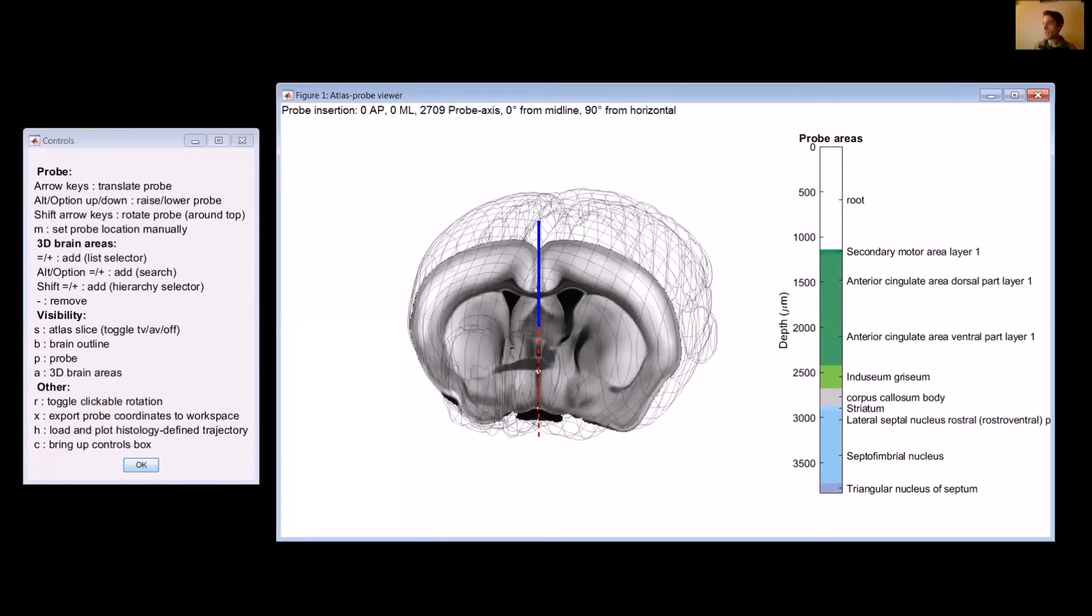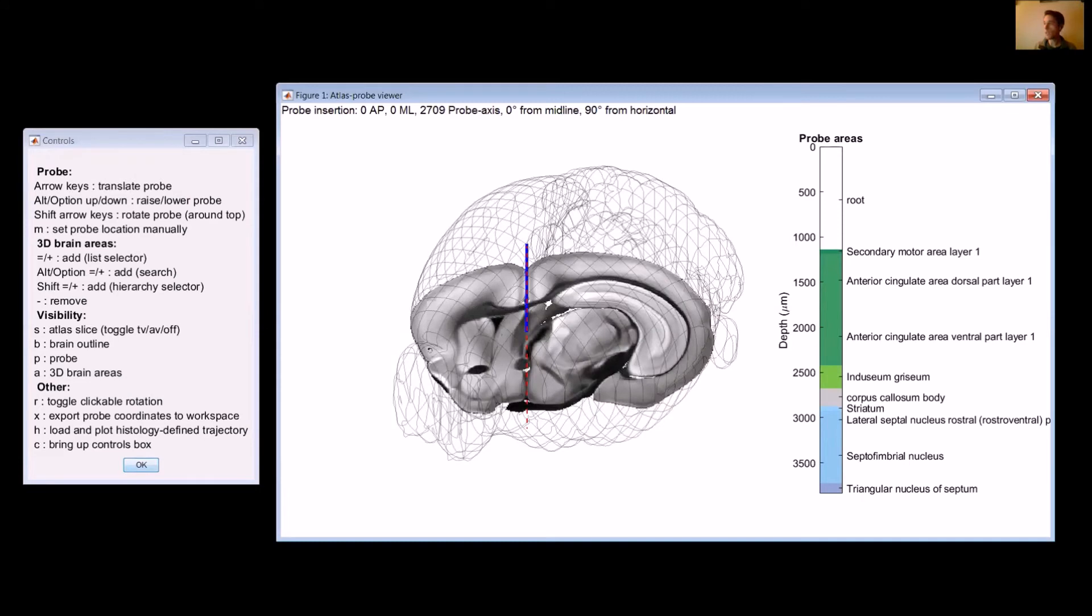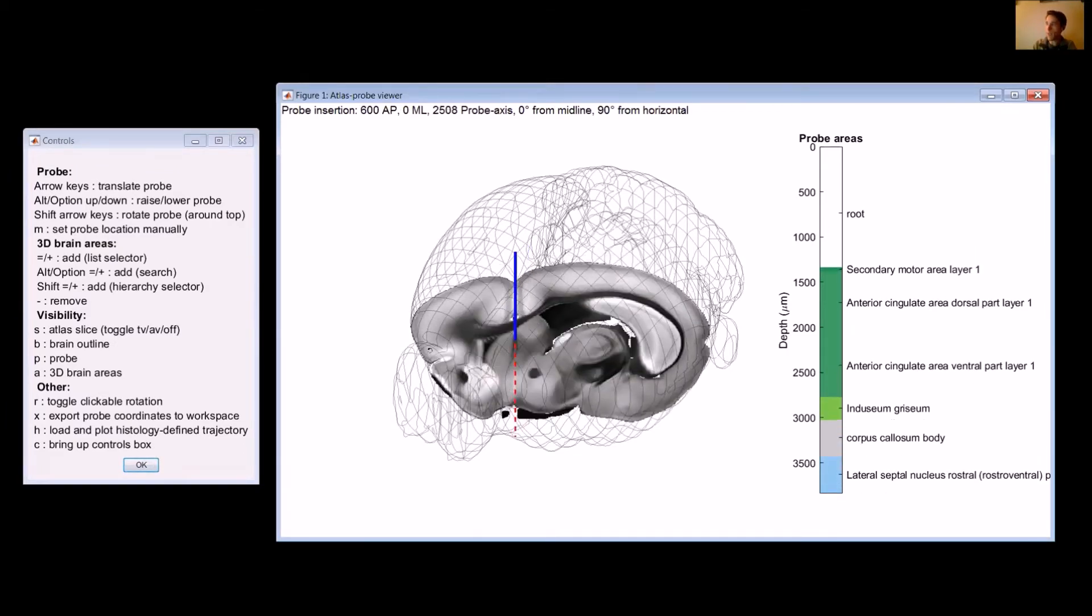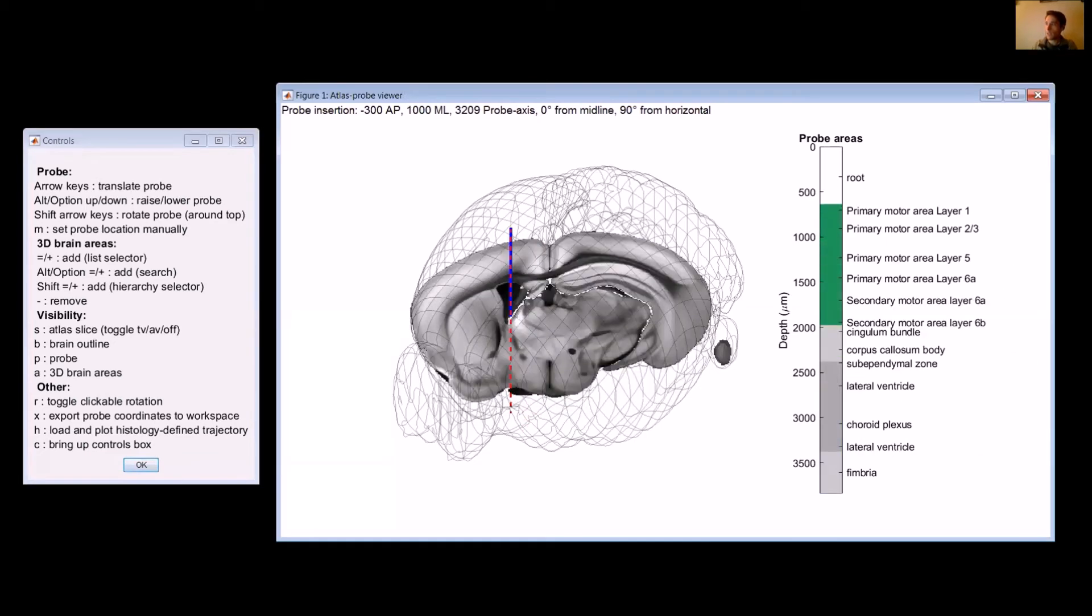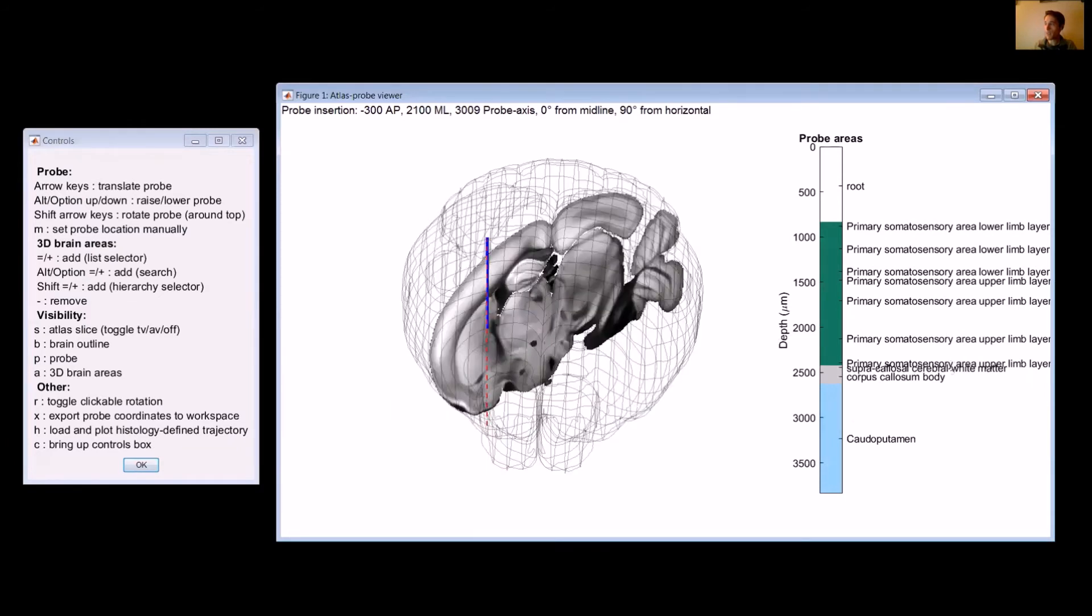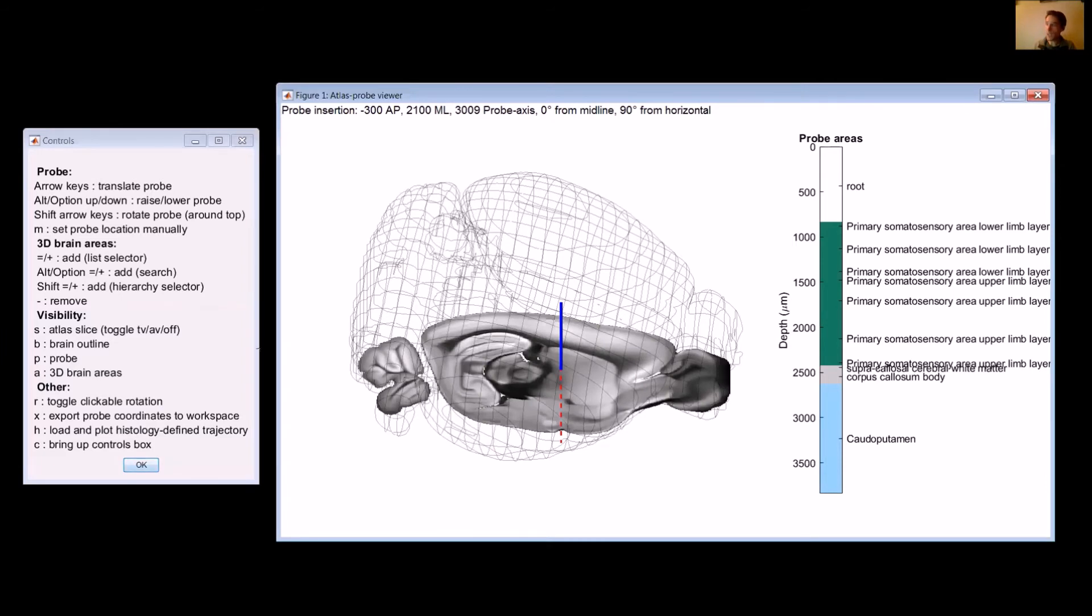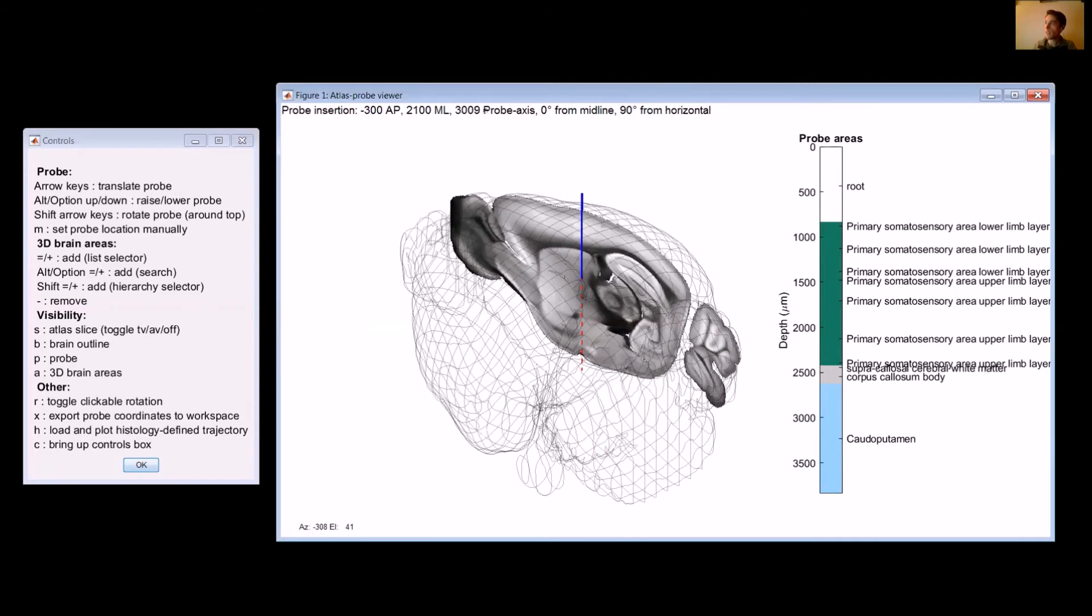Some basic keys are shown up here. This is how you move the probe around. You can move the probe around using the arrow keys. So if I press up, it moves it forward in the brain. If I press back, it moves it backwards in the brain. Left and right, go left and right. So that's how you move it by translating it in space.